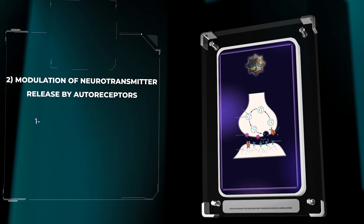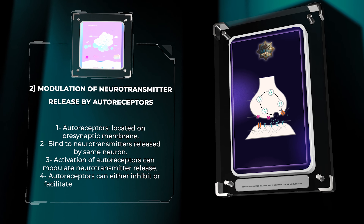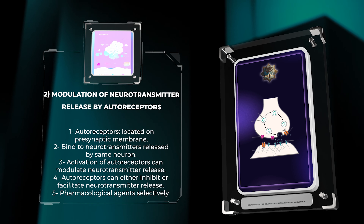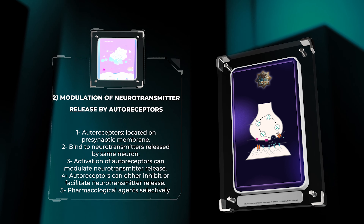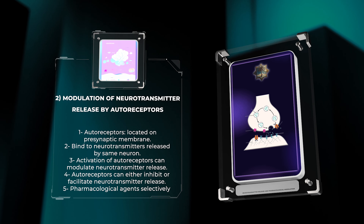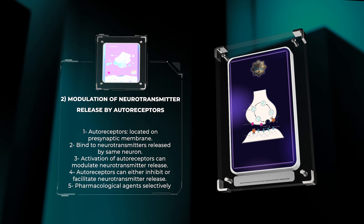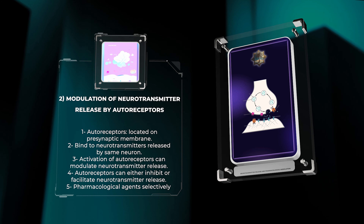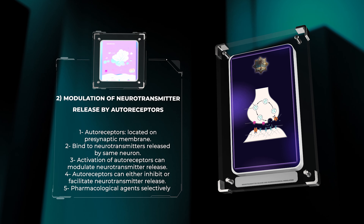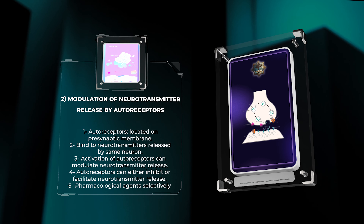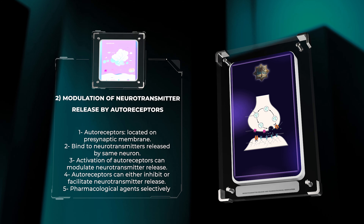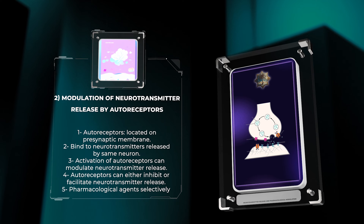Autoreceptors are receptors located on the presynaptic membrane that bind to neurotransmitters released by the same neuron. Activation of autoreceptors can modulate neurotransmitter release through feedback mechanisms. Depending on the receptor subtype, autoreceptors can either inhibit or facilitate neurotransmitter release. Pharmacological agents that selectively target autoreceptors have been developed to modulate neurotransmitter release in a controlled manner.